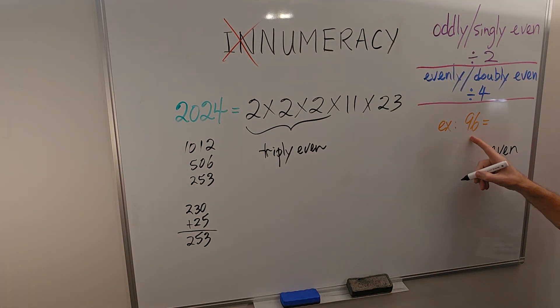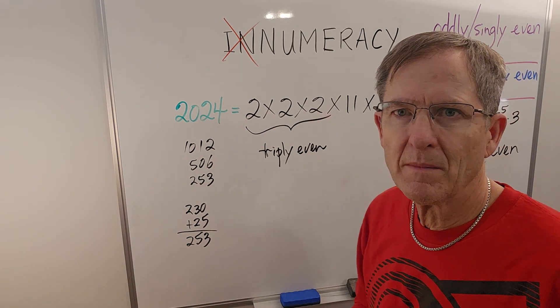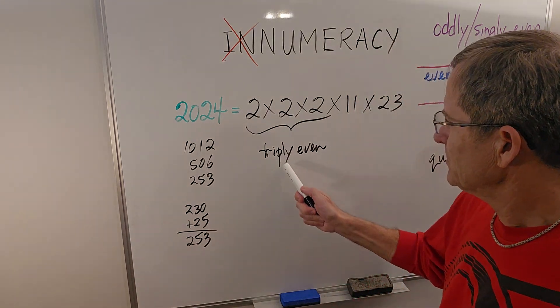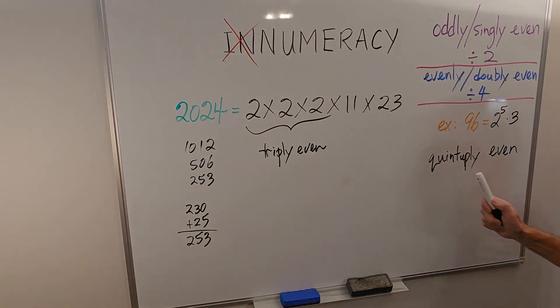Now let's look at another example, 96. 96, of course, is 32 times 3, so that's 2 to the 5 times 3. So that number could be said to be quintuply even. That's not the most common expression, triply or quintuply, but it is used.